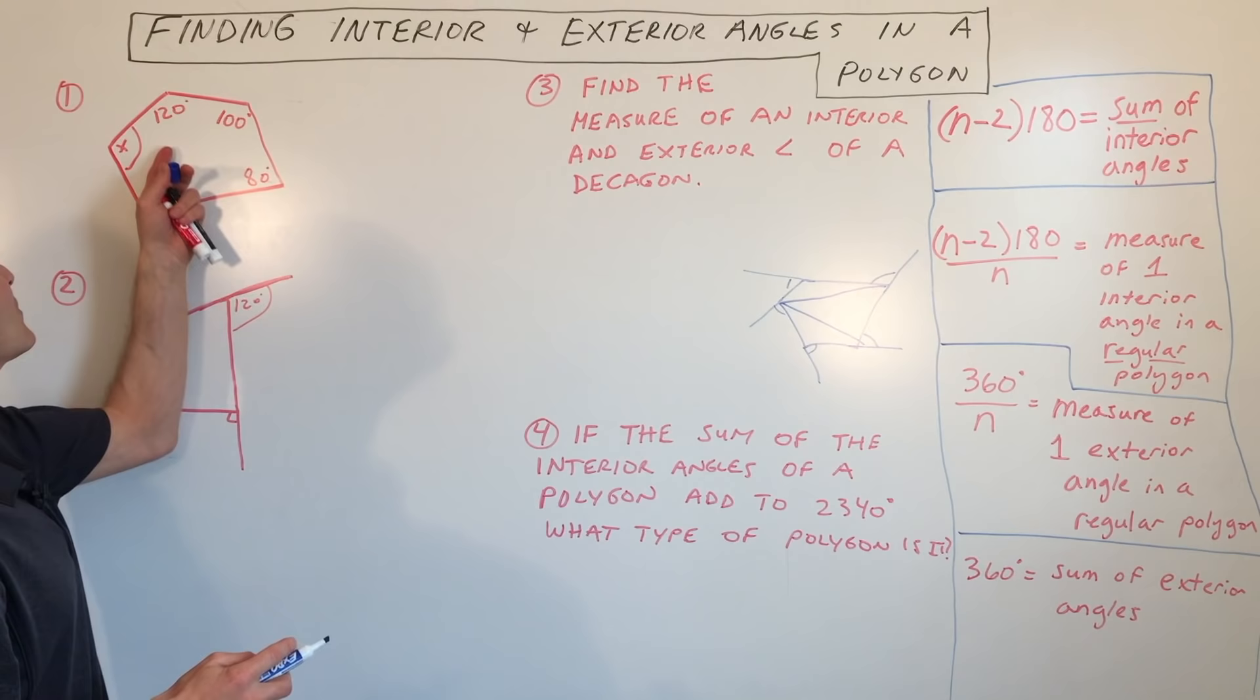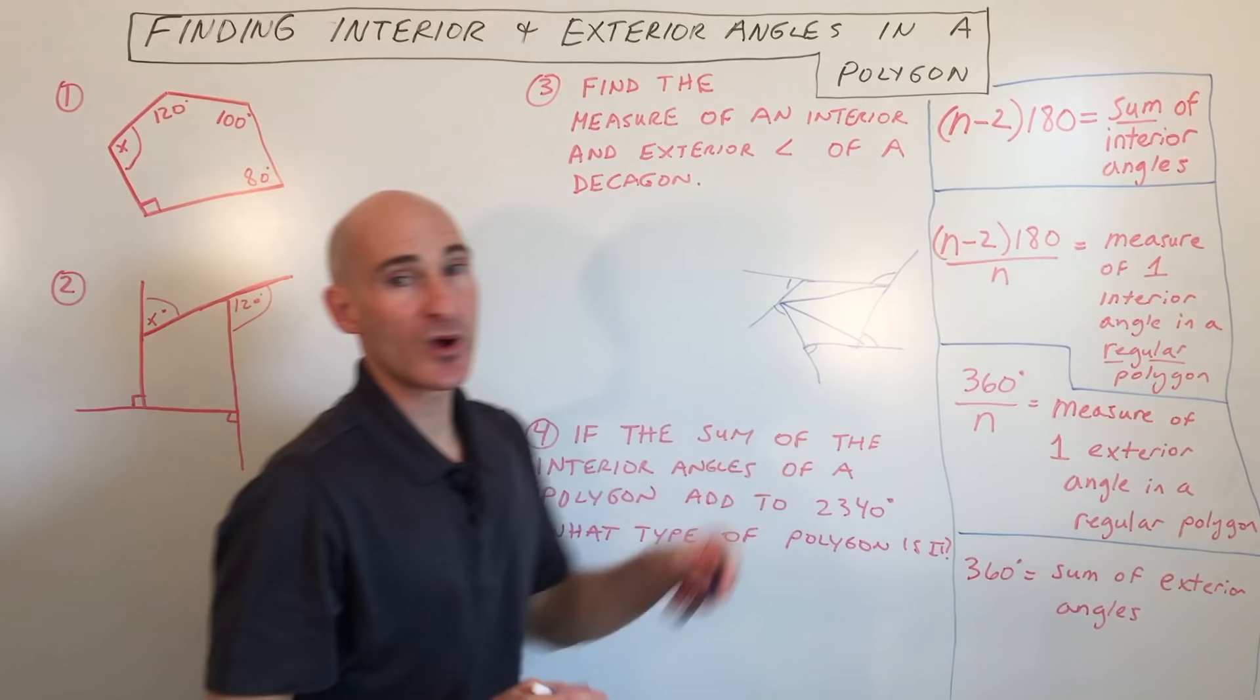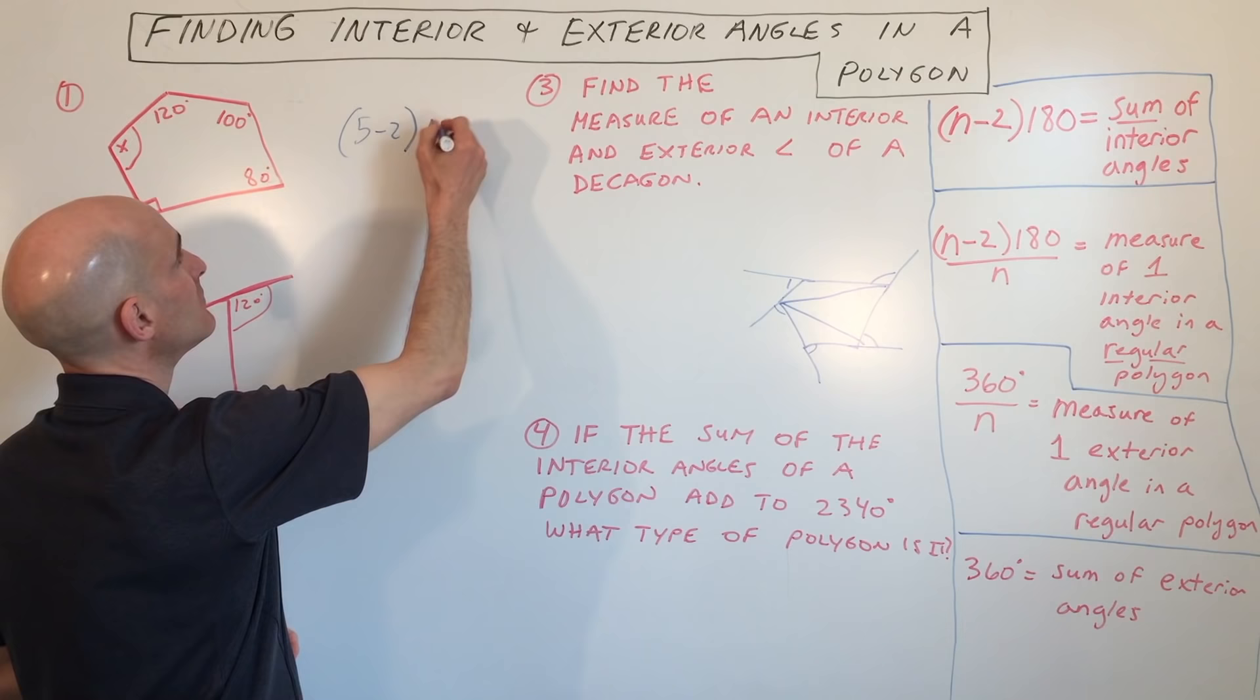So in this polygon here, you can see we have one, two, three, four, five angles, or you could count the sides, one, two, three, four, five sides. So we're going to do n minus two times 180 equals the sum of the angles. So we have five minus two times 180, which is three times 180, which is 540.